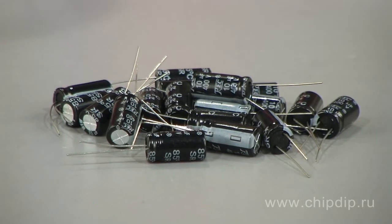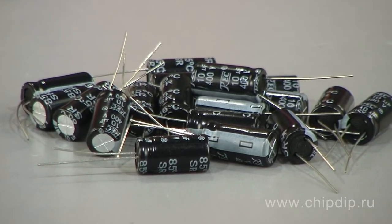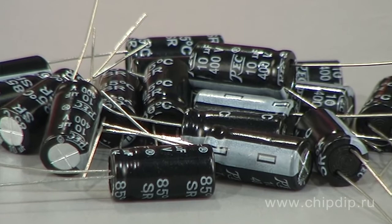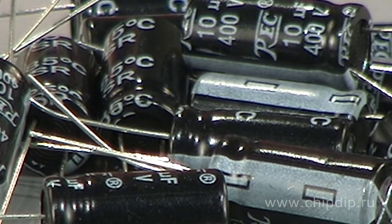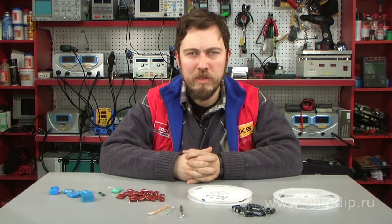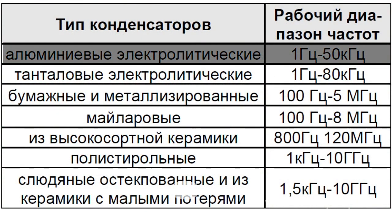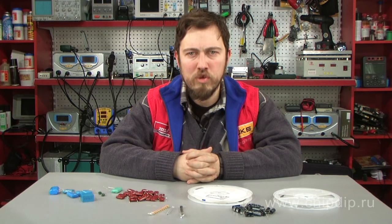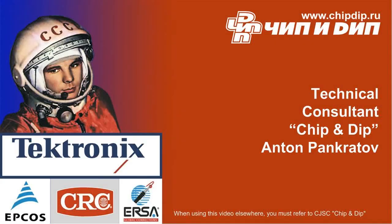The series resistance of aluminum electrolytic capacitors can reach 1 Ohm. This series resistance grows as frequency increases and as temperature decreases. Large dimensions account for their large inductance, which is why they are classified as low-frequency capacitors and are not recommended for frequencies exceeding 30 kHz. They are widespread in low-frequency filtering, bypassing, and isolation applications. When used at high frequencies, they must be connected in parallel with low-capacitance capacitors that have low self-inductance.